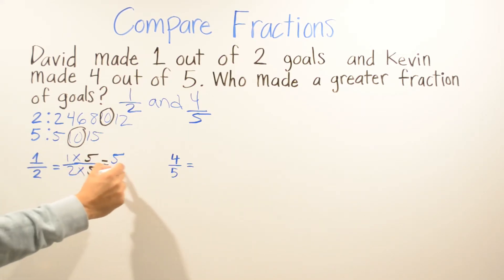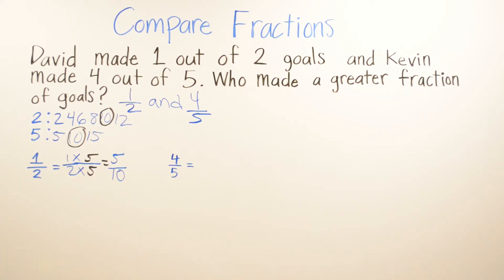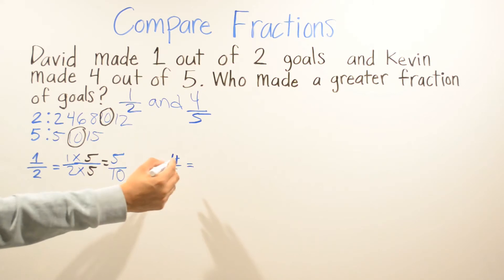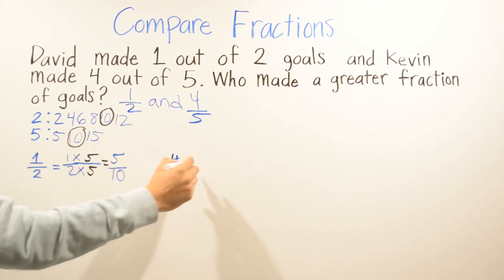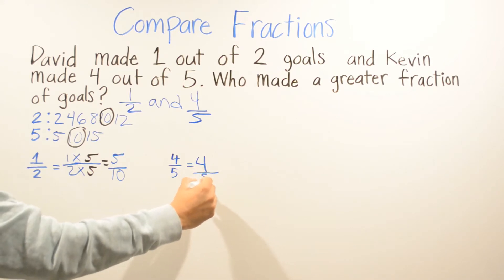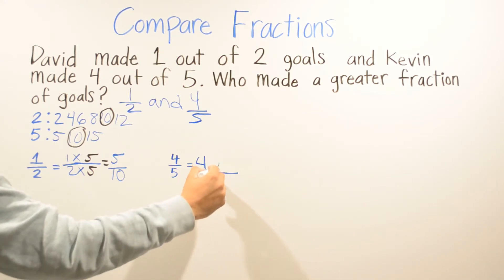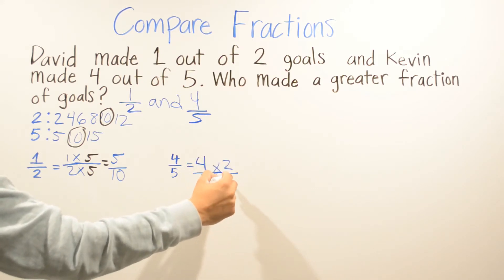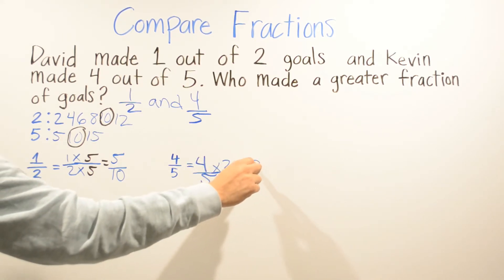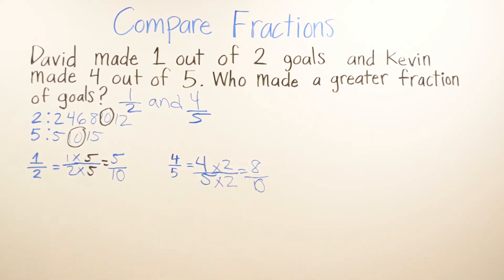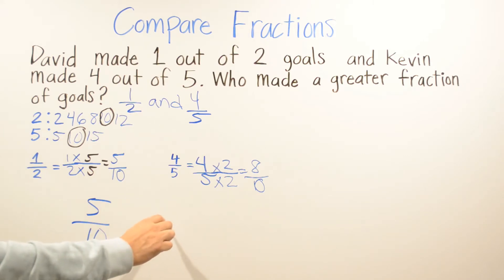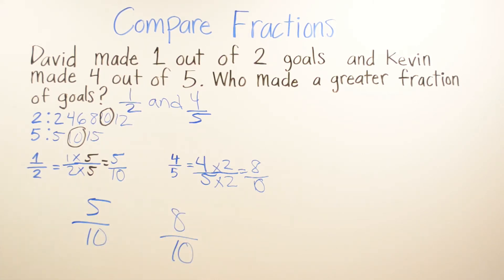Two times five gives me ten on the bottom. Now I do the same thing for four fifths — I multiply by two over two. Whatever I multiply on the top I also have to multiply on the bottom. That gives me eight over ten.